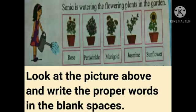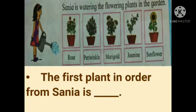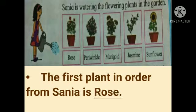See the first plant — it is rose. Then periwinkle, then marigold, then jasmine, and then sunflower. Now let's see some questions. The first plant in order from Sanya is blank. Which plant is there first in order from Sanya? The first plant in order from Sanya is rose.